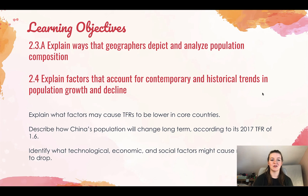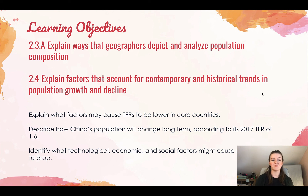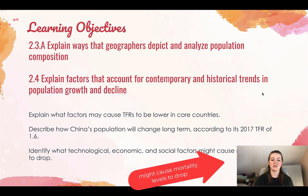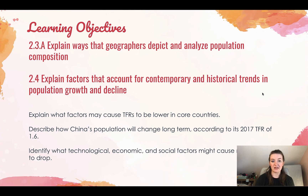And that's it. Learning objectives: explain the ways that geographers depict and analyze population composition using population pyramids, and explain factors that account for contemporary and historical trends in population growth and decline. For your notebook, explain what factors may cause TFRs to be lower in core countries, describe how China's population will change long term given its 2017 TFR of 1.6, and identify what technological, economic, and social factors might cause mortality levels to drop.